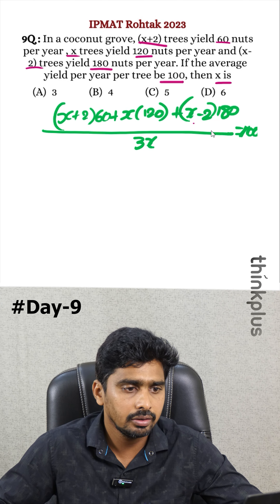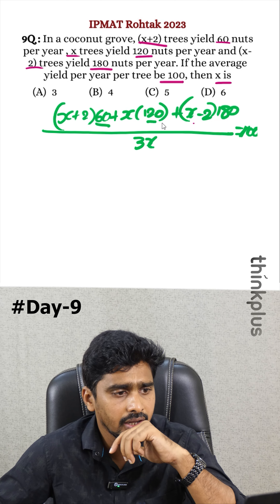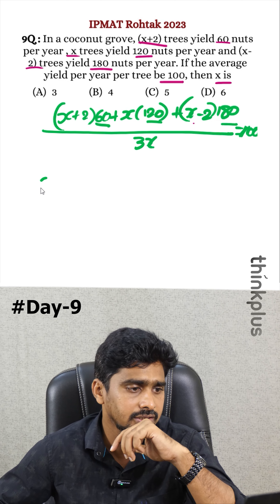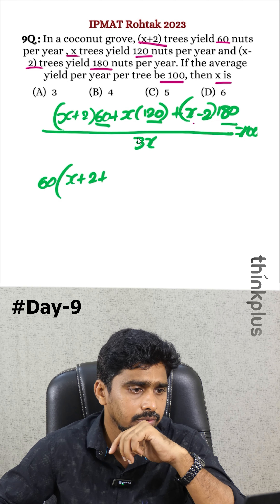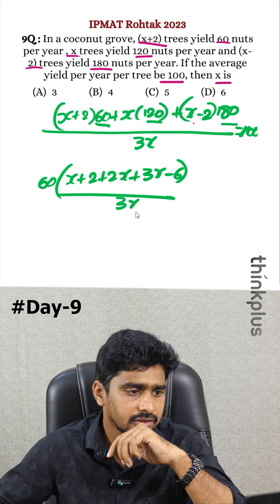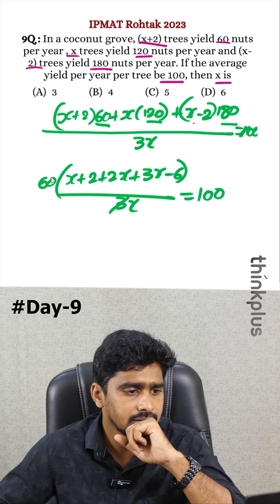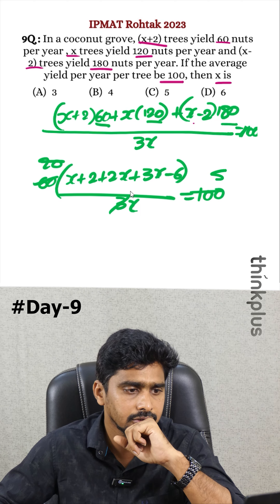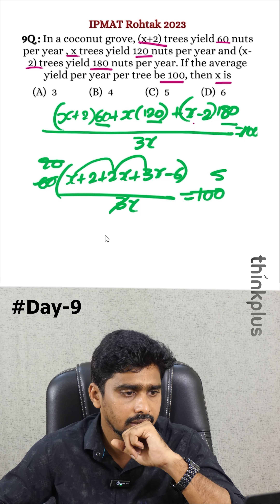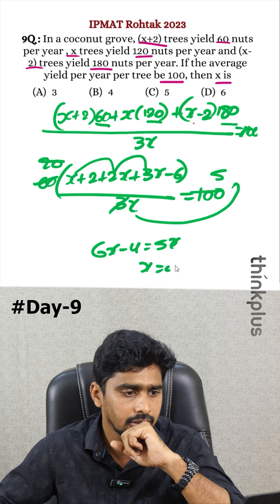To simplify the calculation, factor out 60 from the numerator. This gives 60 times [(x+2) + 2x + (3x−6)] divided by 3x equals 100. Canceling and simplifying, we get 6x minus 4 equals 5x, so x equals 4.